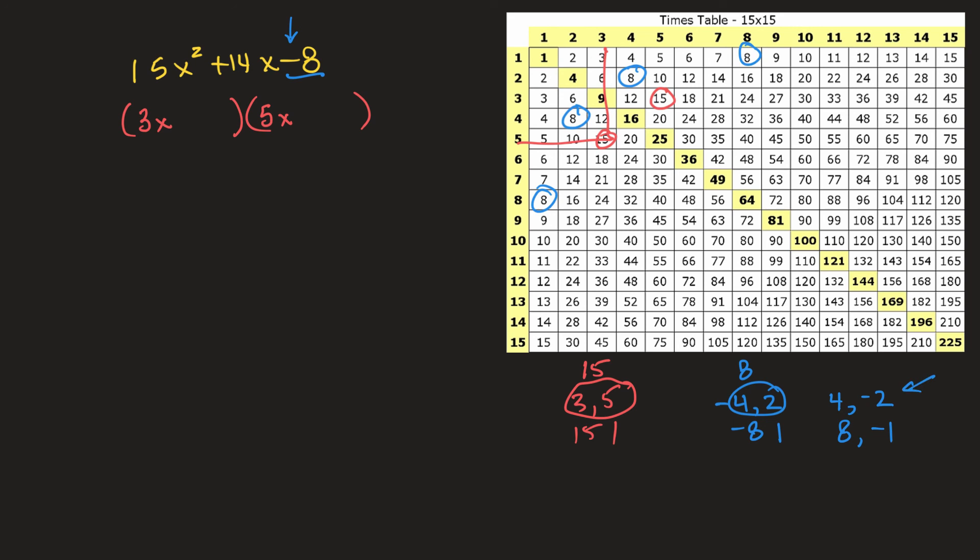Okay, now we'll foil it. So 15x squared minus 6x. 4 times 5 is 20x. 4 times minus 2 is a minus 8. If I add these together, it gives me 14. Lucky. So that is my answer.